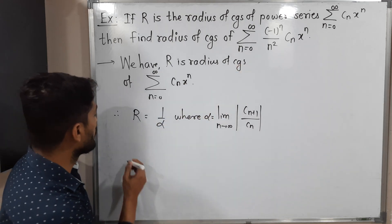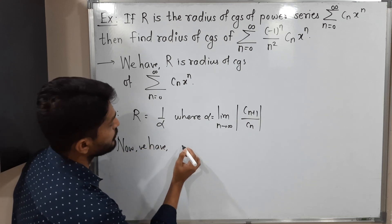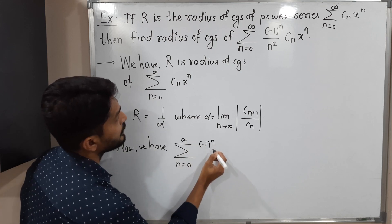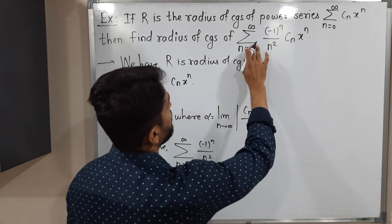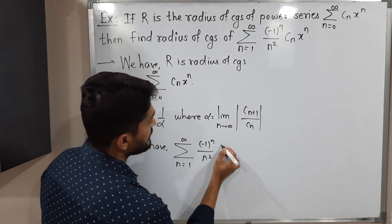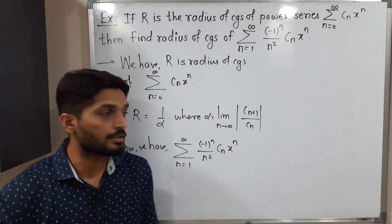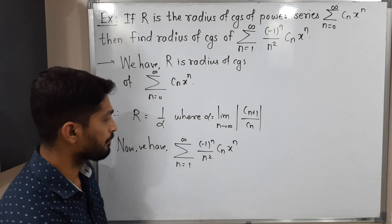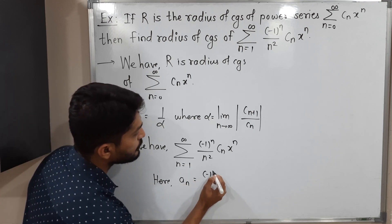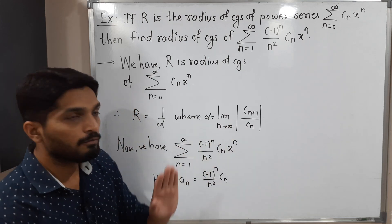Now the power series we have is summation from n = 1 to infinity of ((-1)ⁿ / n²) · cₙ · xⁿ. Note n should vary from 1 to infinity, otherwise the denominator will be zero. The coefficient — the multiple of xⁿ — is aₙ = (-1)ⁿ / n² · cₙ.